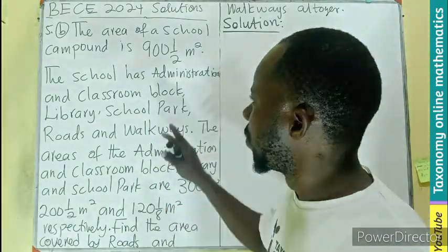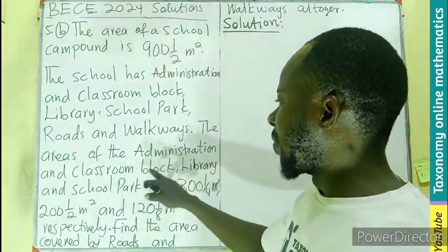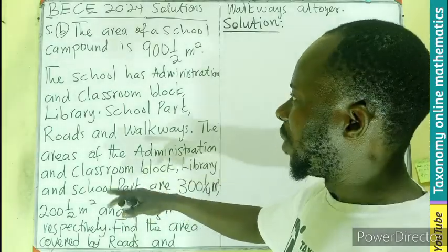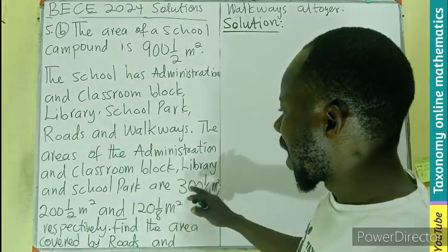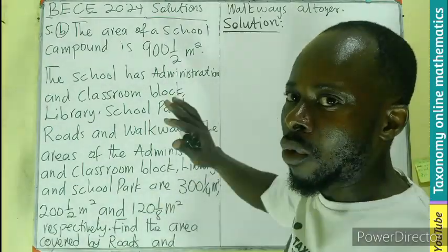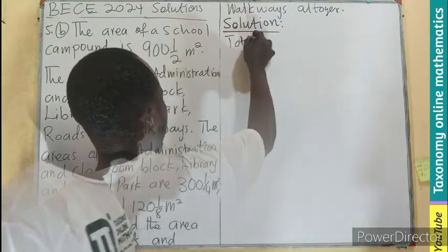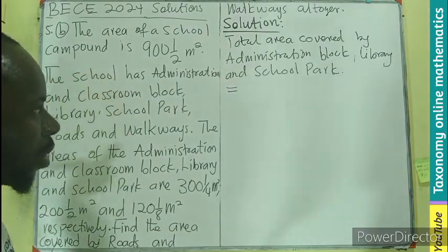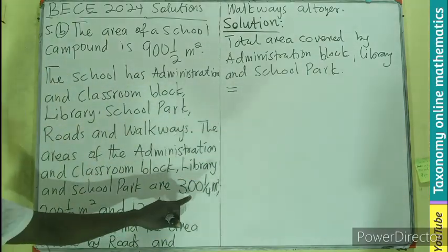If we add all of them, we should get the total. We need to find the total of the administration block, the library, and the school park. When we take that from the total area of the school compound, the remaining will be the area covered by the roads and the walkway. So first of all, let's find the total area covered by the administration block, the library, and the park.